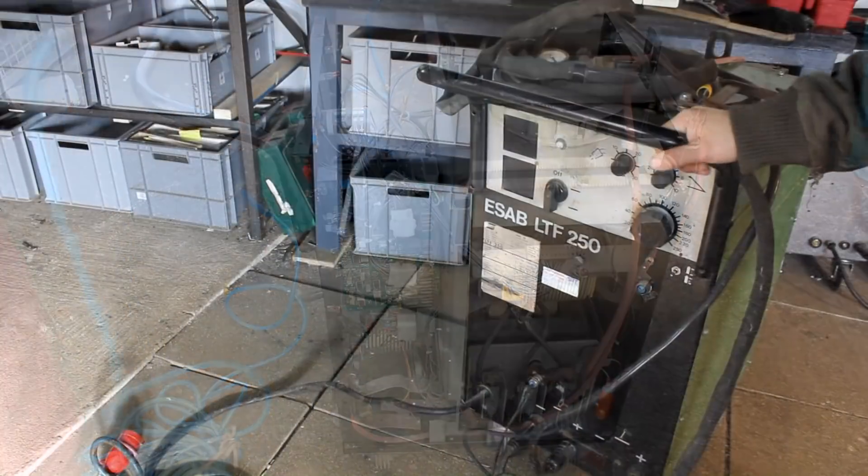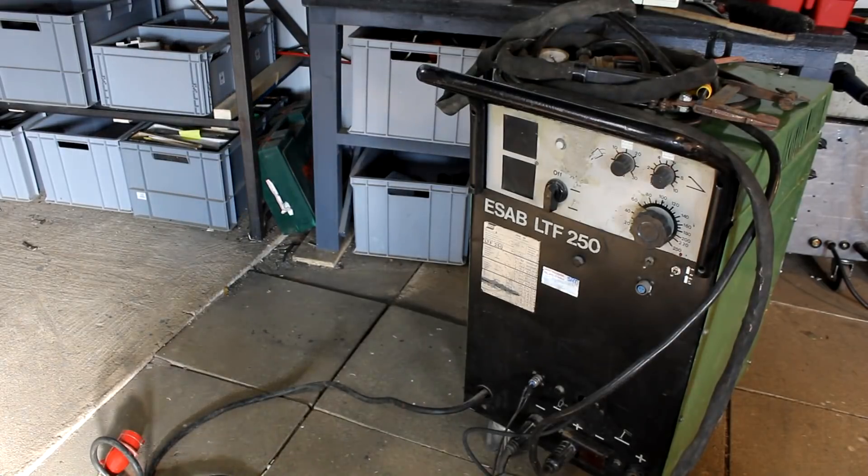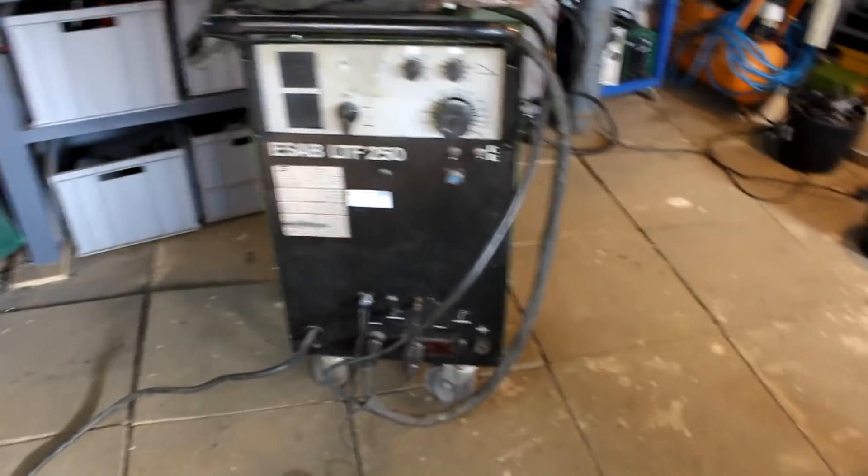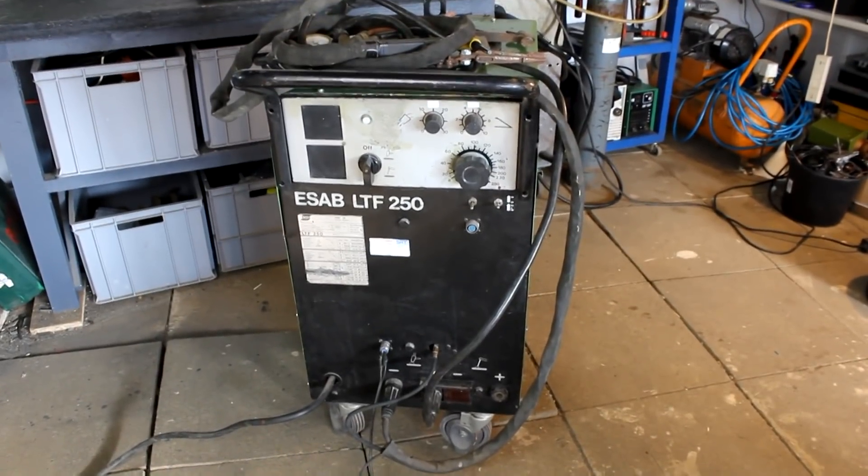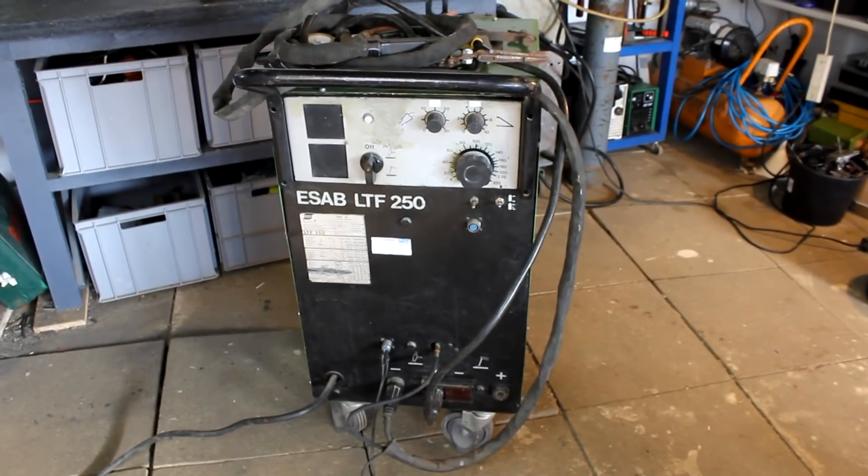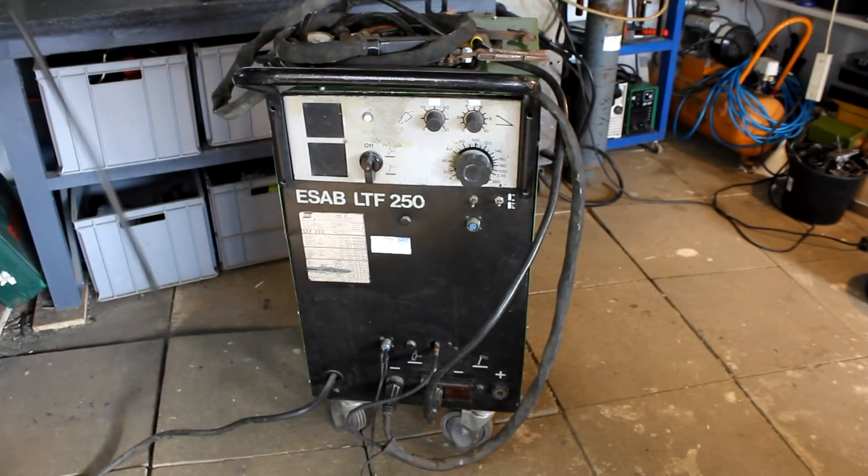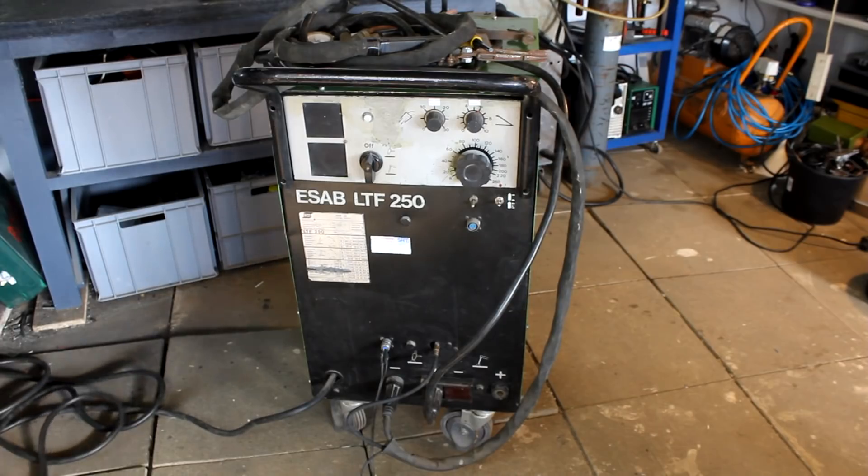So this is an ESAB brand LTF 250. And ESAB or ESAB, that's a Swedish manufacturer of welding machines. This one might be maybe from the late 80s or early 90s. And it's a DC-only TIG welder for up to 250 amps.